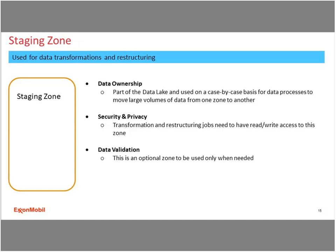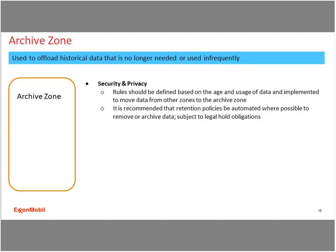The staging zone is an optional zone to be used when needed. This zone is used to store data during ETL job executions, and the data storage is temporary — at the end of the process, the data should be cleared and removed. The archived zone will store data that should be retained due to any business requirements. Rules should be defined based on age and usage, and it's recommended that retention policies be automated. This zone allows us to address data retention requirements when needed, store multiple versions of data for tracking purposes, and offload historical data that's no longer needed in any of the other zones.